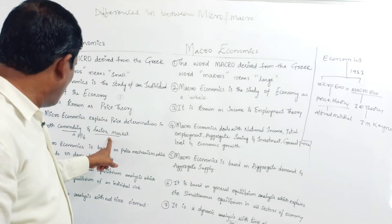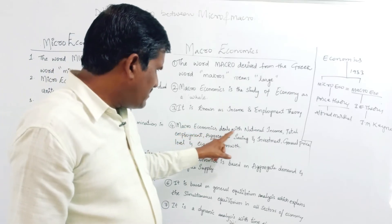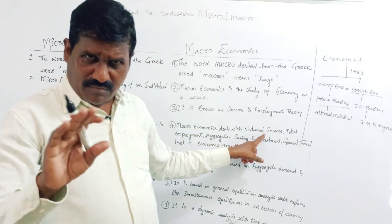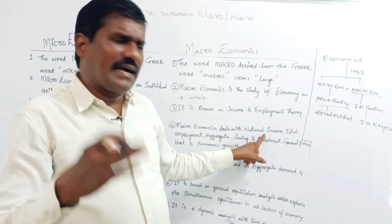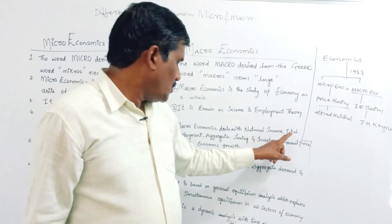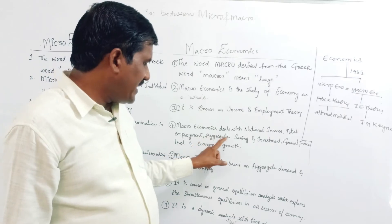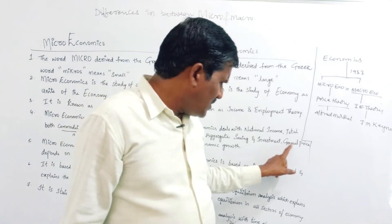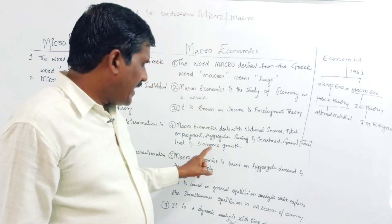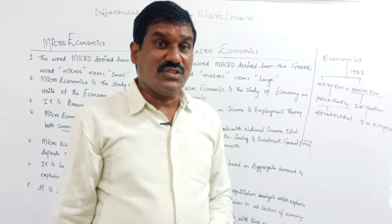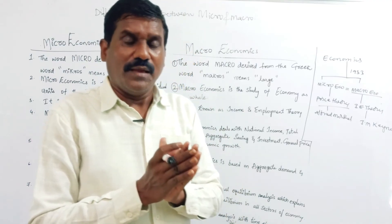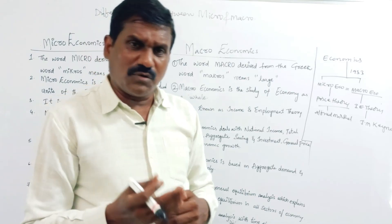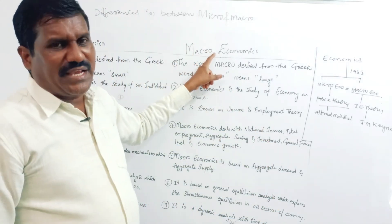Macroeconomics deals with the national income — not single units but the whole economy. It studies national income, total employment, aggregate saving and investment, general price level, and economic growth. These are the main topics discussed in macroeconomics, where the total economy is analyzed.